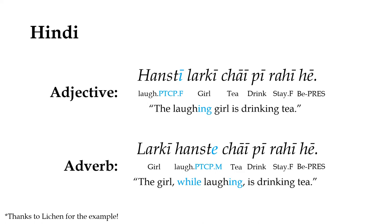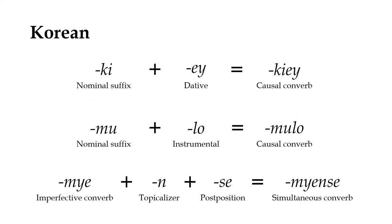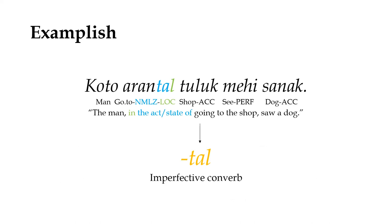Some languages are content in letting participles serve double duty in this way, sometimes giving them the rather confusing term adverbial participles. But just like with converbs that derive from verbal nouns, it's quite common for these participles to combine with case markers or other adpositional morphology to form new full-fledged converbs. Each of the language's case markers may independently combine with the various verbal nouns or participles, or sometimes even other converbs, to give rise to a different type of converb, with the case marker's original meaning being metaphorically extended to describe the relationship between the converb clause and the main clause.